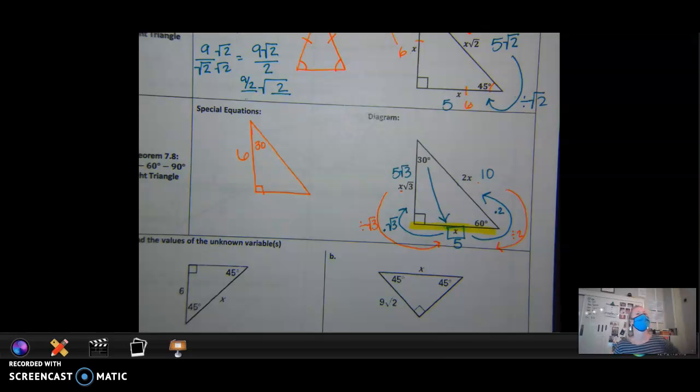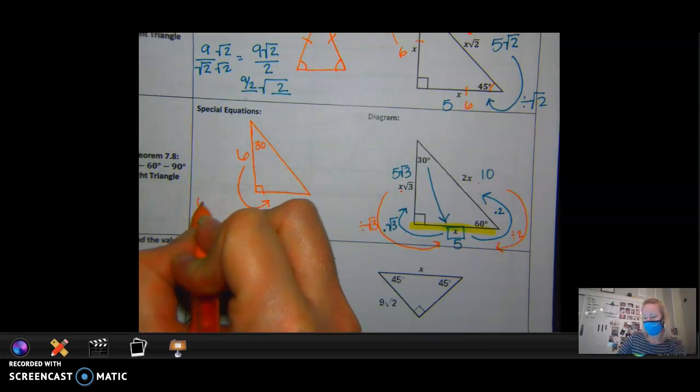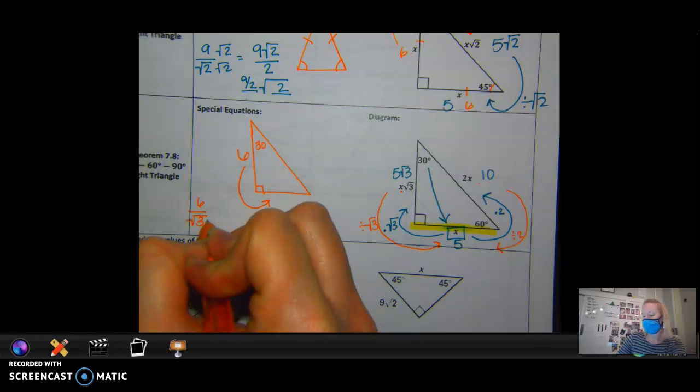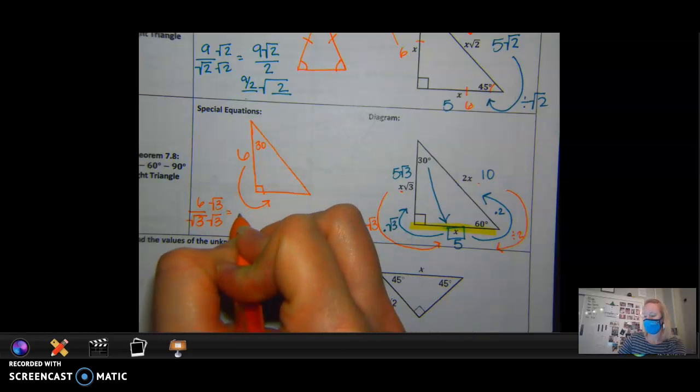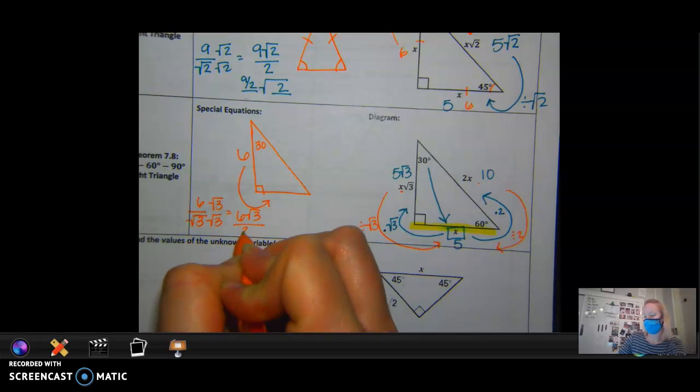So which side do I need to find first? They've given me the medium side of this 30-60-90 triangle. So which side do I find first? The small one. How do I go to the small one? Divide by the square root of 3. Again, our radical rules. I need to rationalize. So what do I have on top? What did you say? I'm sorry. 6 square roots of 3. Thank you. And what's on bottom?